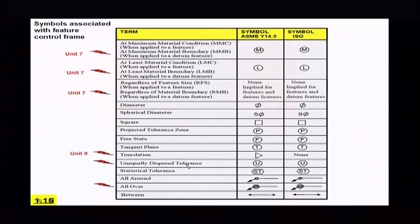We have the unequally disposed tolerance. We use this for profile tolerance. It's circle U. We're going to cover this here a little bit later in this unit.